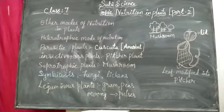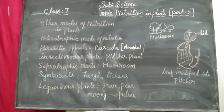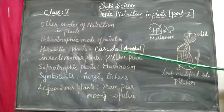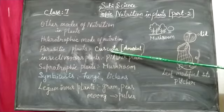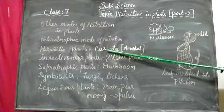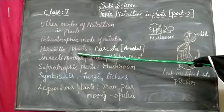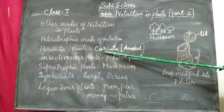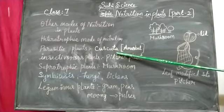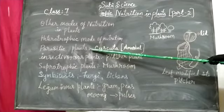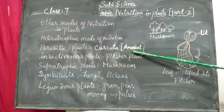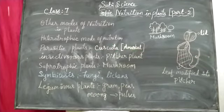Therefore they take the nutrition from another plant. The host plant is the plant which is preparing its own food, and the other plant depends on it. For example, the Cuscuta plant depends on other plants for its food. Plants which depend on other plants for their nutrition are known as parasitic plants. Example: Cuscuta or Amarbele.